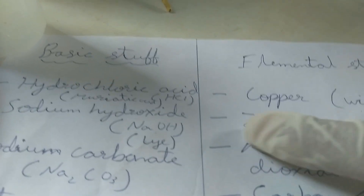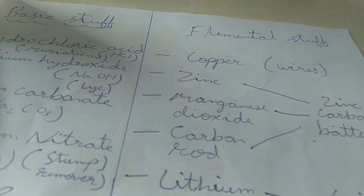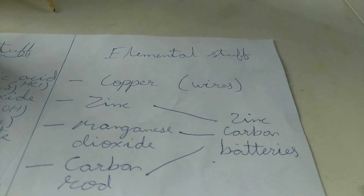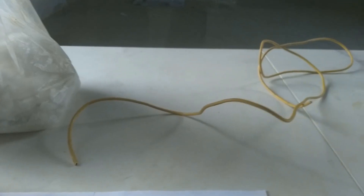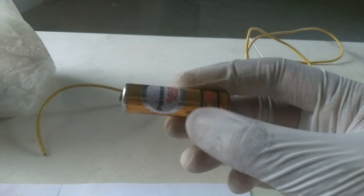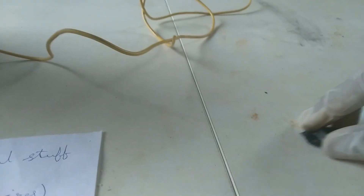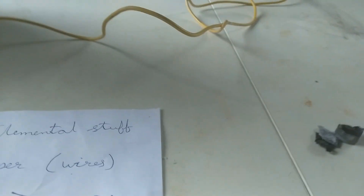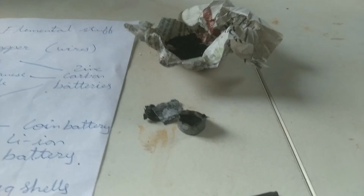Secondly, some zinc. I got zinc, manganese dioxide (MnO2), and a carbon rod all from a single thing: zinc-carbon batteries — the batteries you often use daily. I peeled one all the way down and found zinc, manganese dioxide, and a carbon rod inside. You can use the carbon rod for electrolysis processes. I also made a video about this.